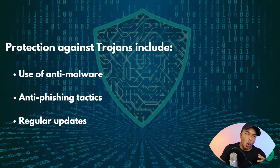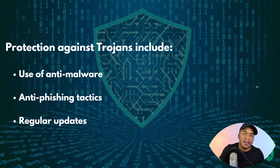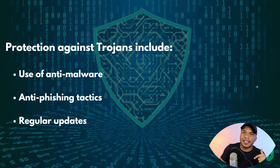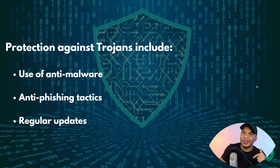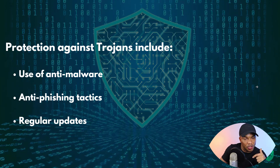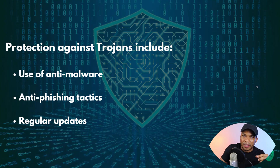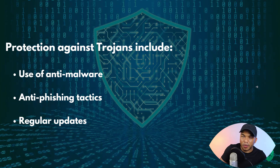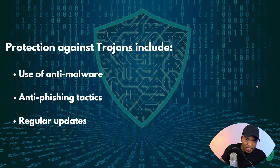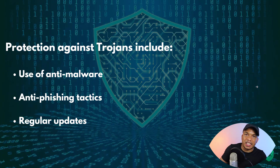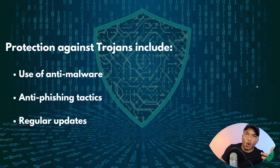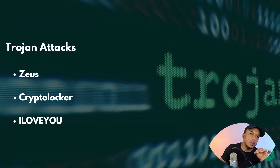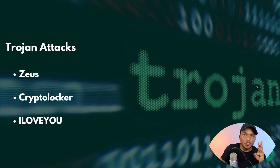To protect your computer from trojan attacks: use anti-malware software, practice anti-phishing tactics — don't click on suspicious links in emails — and perform regular updates. Regular updates will help prevent exploit and rootkit trojans from taking advantage of vulnerabilities. Use anti-malware, anti-phishing practices, and keep your system updated as often as possible.